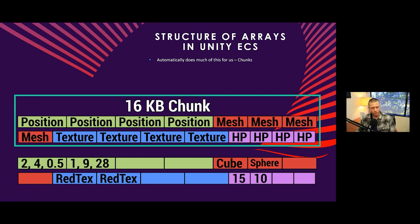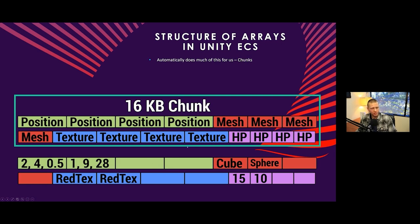One interesting thing about chunks is that when we create a new chunk, all the memory is pre-allocated. When we want to add a new entity, we just need to populate the values — the memory is already allocated and we literally just copy the data values in. In this example at the bottom, we have two entities, with the first two positions, meshes, textures, and health values populated. Adding another entity means copying data into the third slot. Once the chunk fills up, the computer allocates a new chunk.